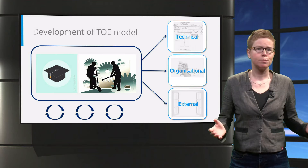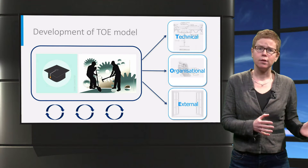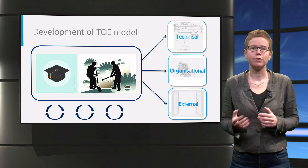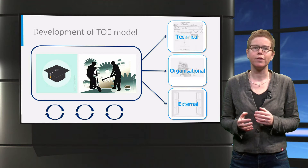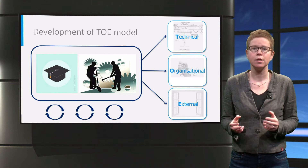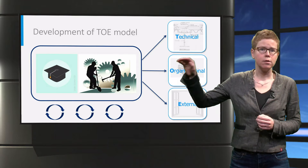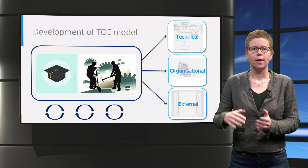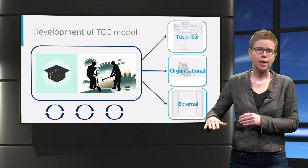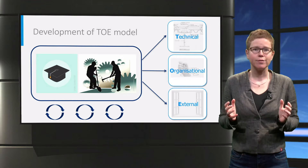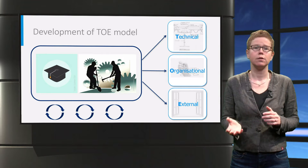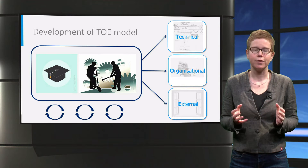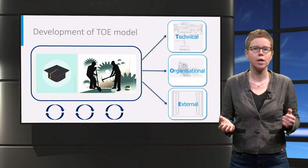First, we gathered as many potential elements as possible, both from detailed literature study and numerous interviews with practitioners. After careful consideration, we included 47 of the found elements in our complexity framework, consisting of two layers. The first layer is formed by the three dimensions: technical, organizational, and external complexity. The second layer is the 47 elements each assigned to either the T, O, or E dimension. The final list was validated in two subsequent studies involving more than 100 projects.